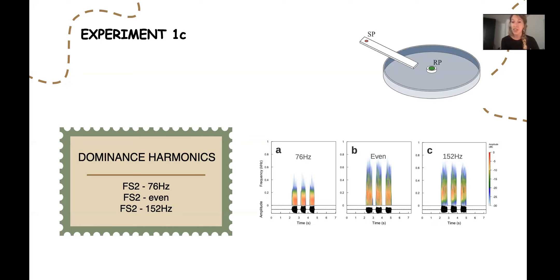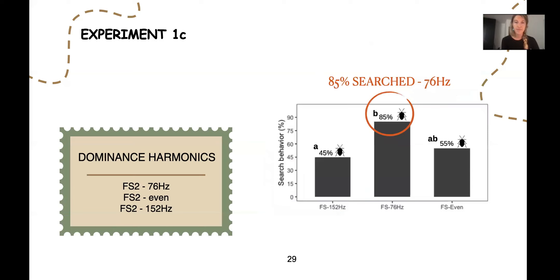We counted the number of individuals that showed searching behavior in correspondence or immediately after each playback. For this experiment, we found that 85% searched when exposed to 76 hertz, the lower dominant frequency. The dominant frequency is a very important component for the calls. This part was very important for us in order to develop an optimal signal.